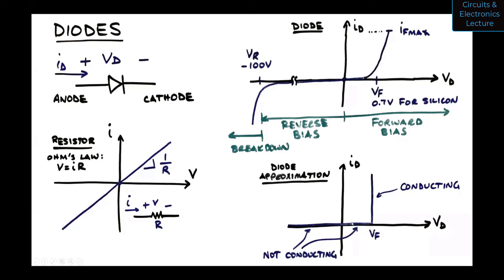That defines the knee in the curve, and current can keep increasing as you increase voltage until you reach the maximum current, at which point the diode gets damaged. The diode approximation shown here is good for design and analysis. In the approximation, the curve is horizontal at zero current until the forward voltage Vf is reached, then current can flow. What restricts the current if the line is straight up and down? It will be an external resistor. We'll use this approximation in an example where we assume the diode is either conducting or not conducting.